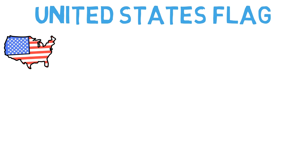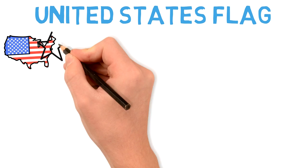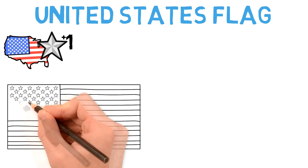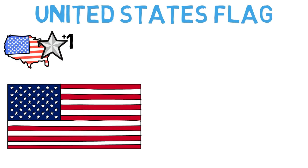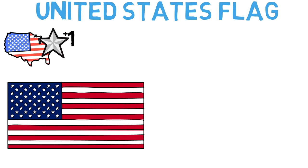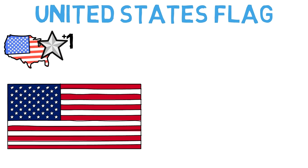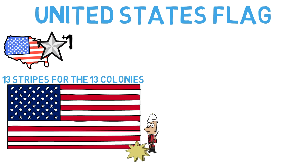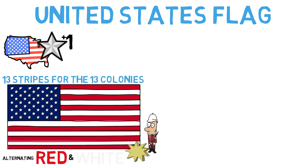The US flag has changed a lot. We've talked about this numerous times in past videos, with the number of stars changing as new states joined the Union. The stars changed, but the stripes never did. They have always been 13, representing the initial 13 colonies which rebelled against the British, in alternating red and white. However, the choice of colors for the stripes could have been different. In fact, it seems that at one point, it was different.